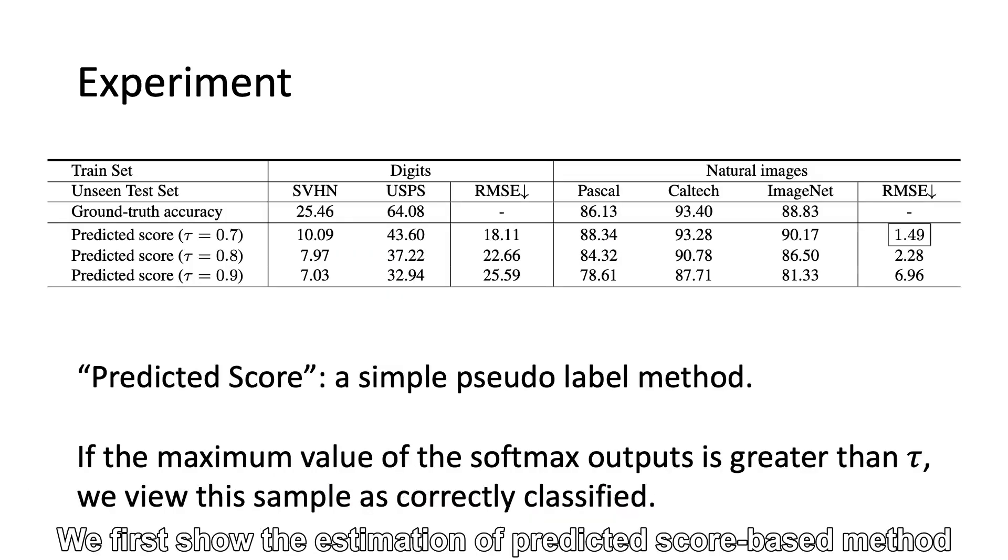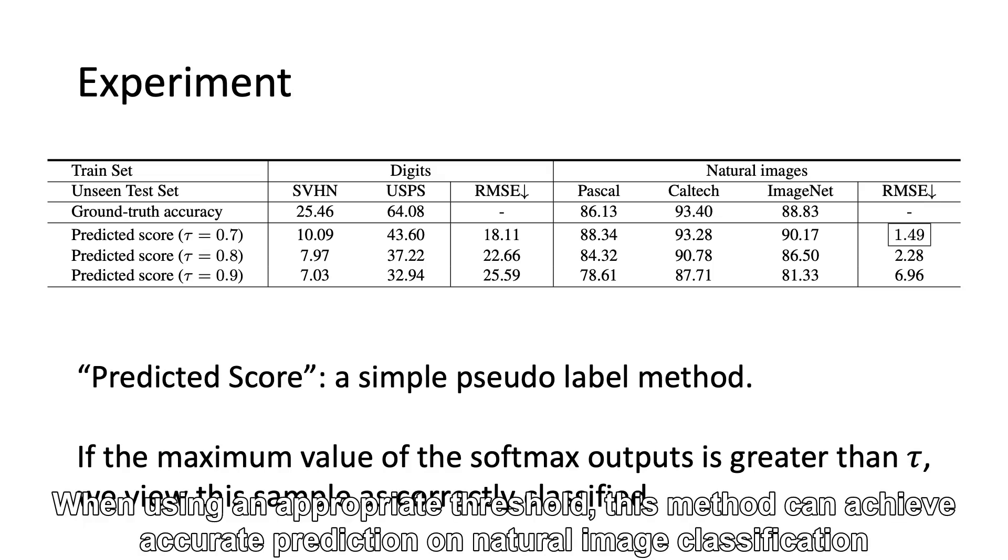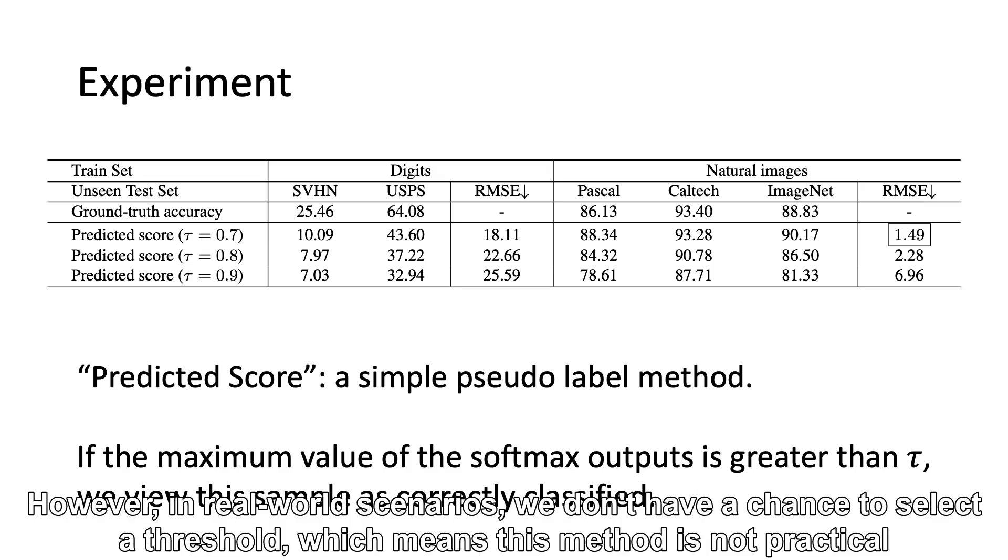We first show the estimation of the predicted score-based method. When using an appropriate threshold, this method can achieve accurate prediction on natural image classification. However, in real-world scenarios, we don't have a chance to select the threshold, which means this method is not practical.